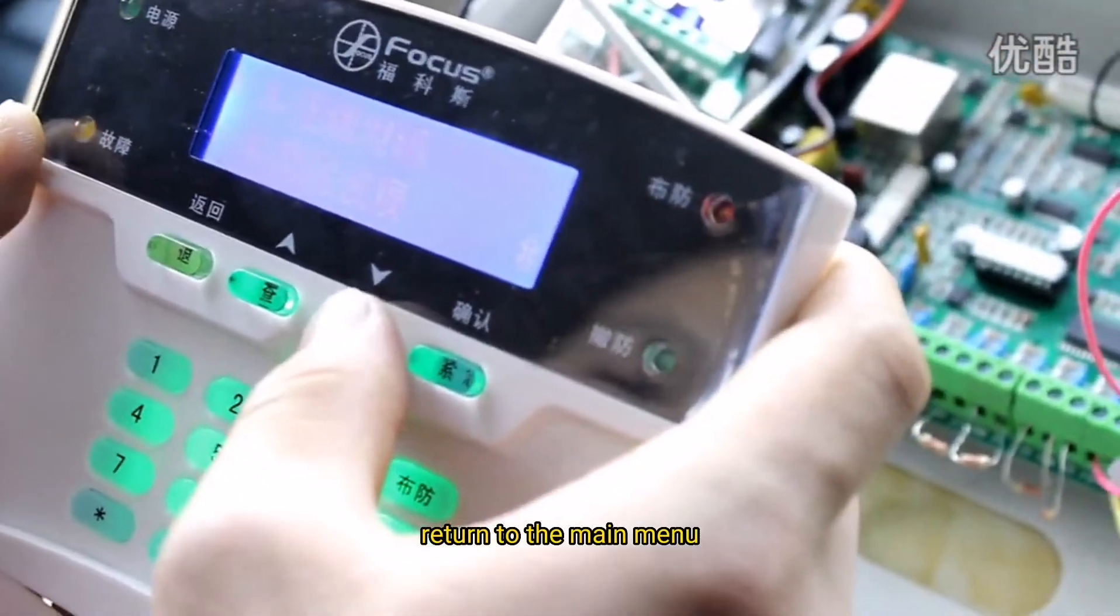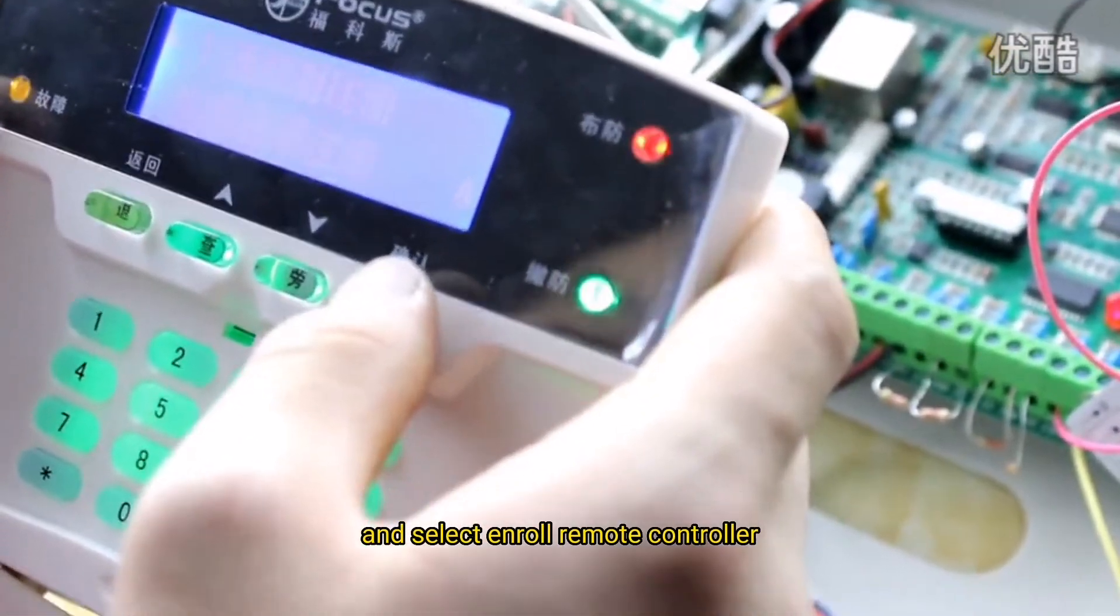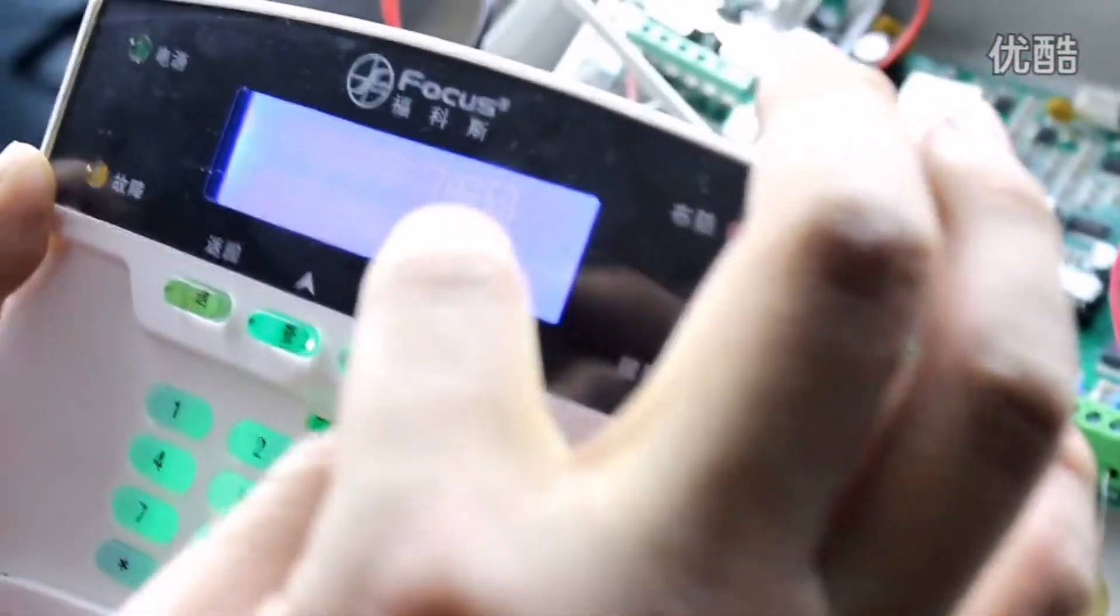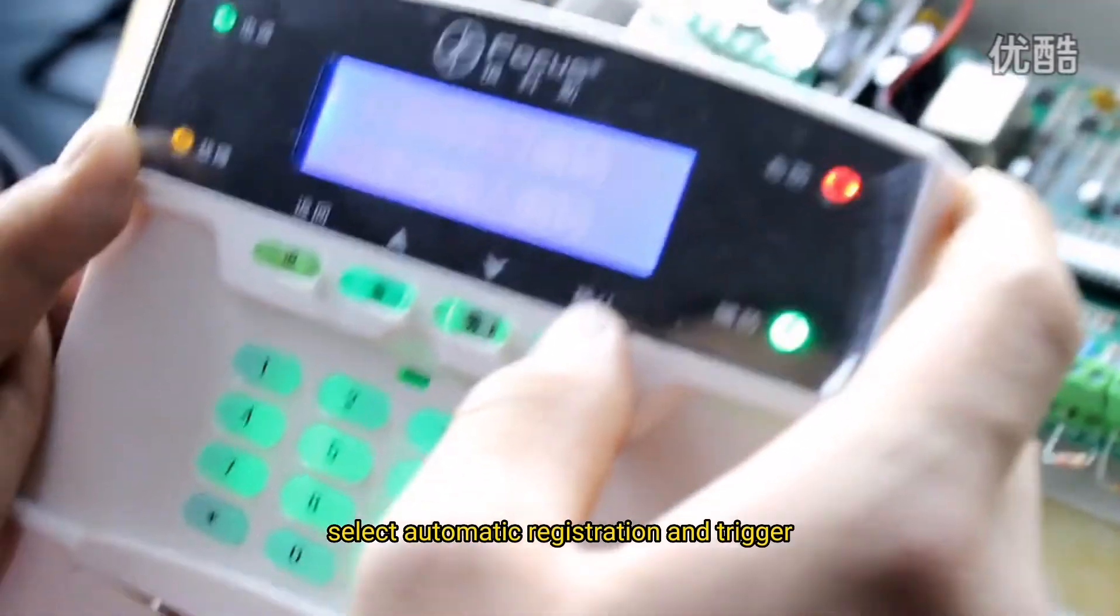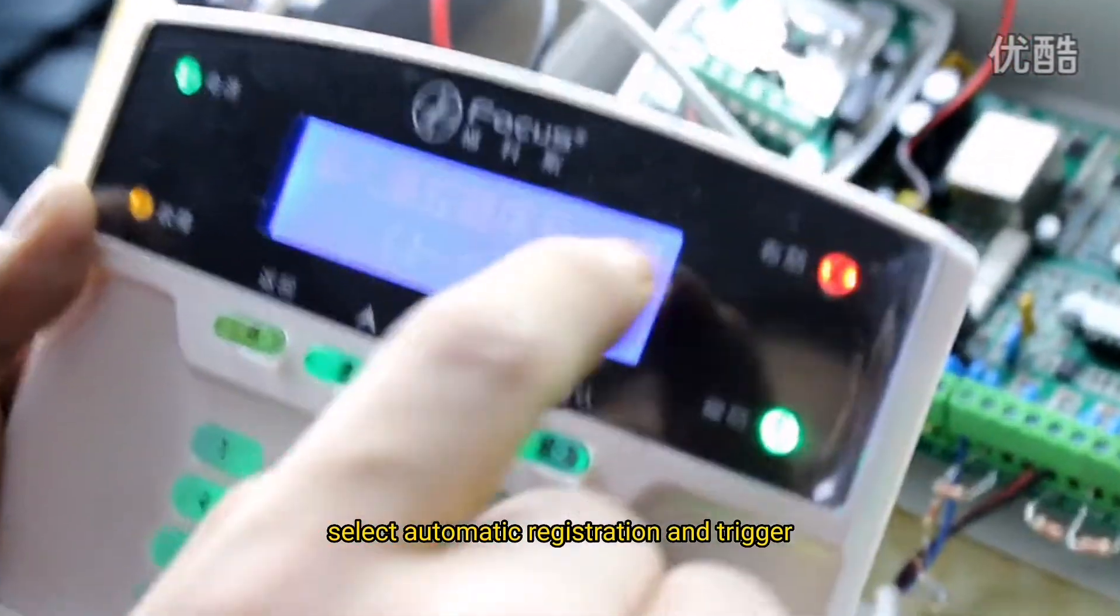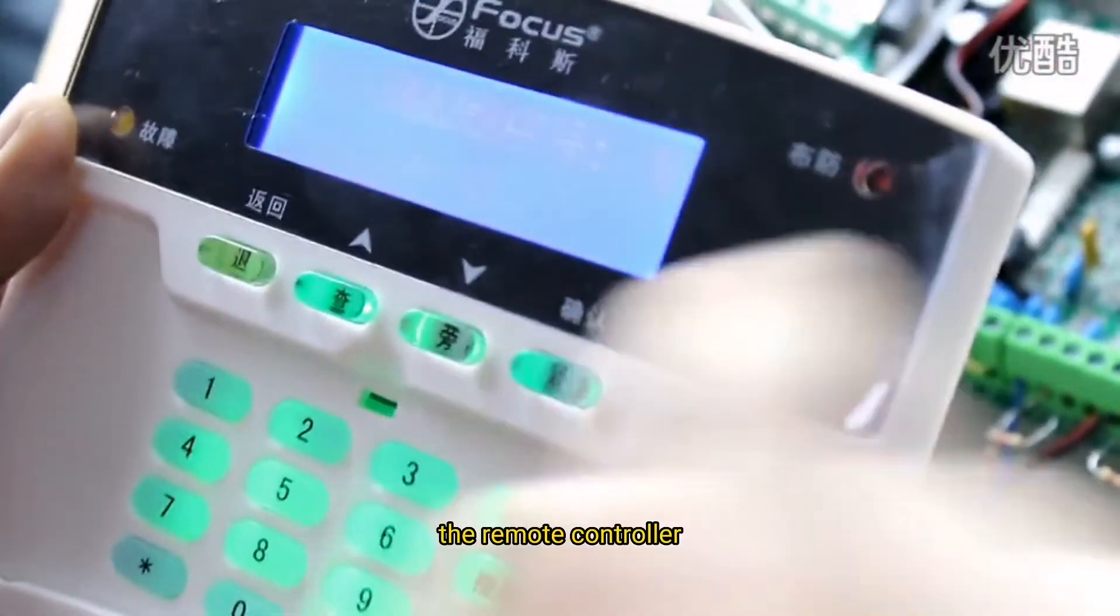Return to the main menu and select Enroll Remote Controller, select Automatic Registration, and trigger the remote controller.